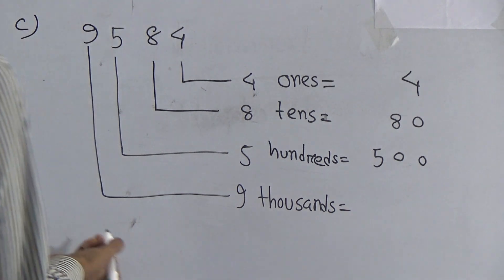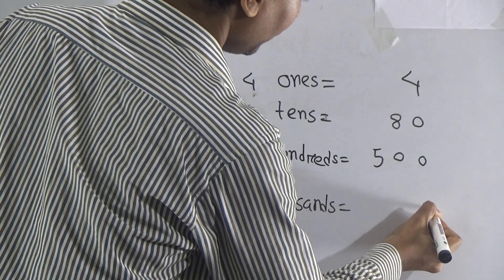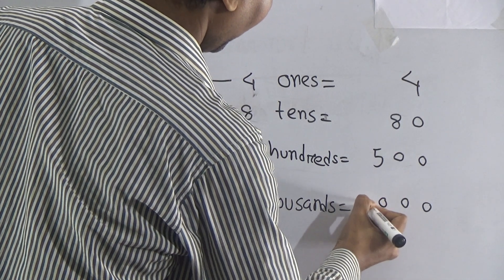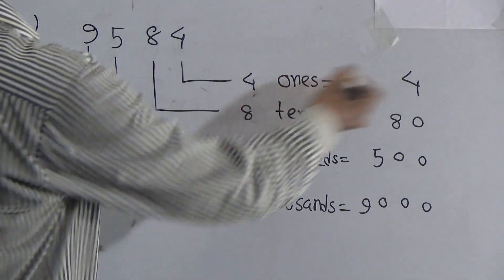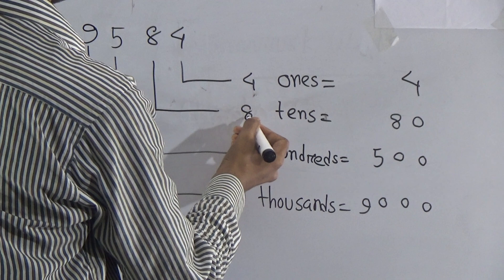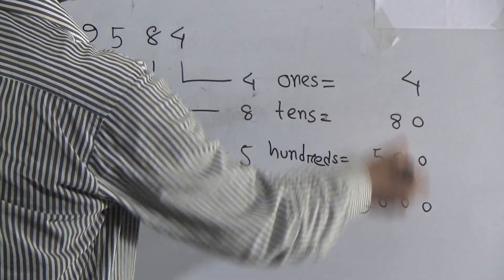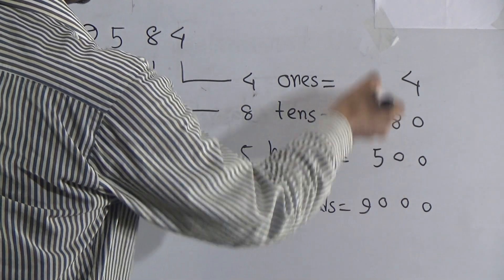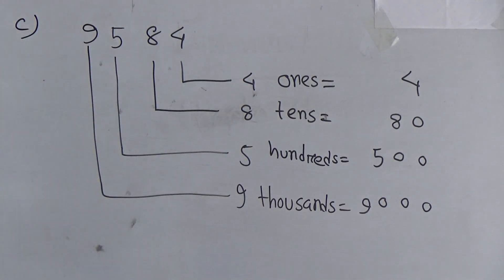Five hundreds, that means zero, zero, and five. Now look — nine thousands. This is nine thousands. Maintain the sequence: zero, zero, zero, then nine. After writing, you may re-check like this way: four ones is 4, eight tens means 8 in the tens place, 500 means the hundreds place, 9000 means the thousands place. Like this way you may practice.